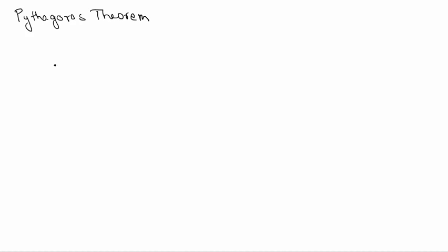In this tutorial we are going to visually understand and prove the Pythagorean theorem. If we have a right angle triangle where this side is A, the base is B, and the hypotenuse is C — the side opposite the 90 degree angle — then the Pythagorean theorem states that A squared plus B squared is equal to C squared.